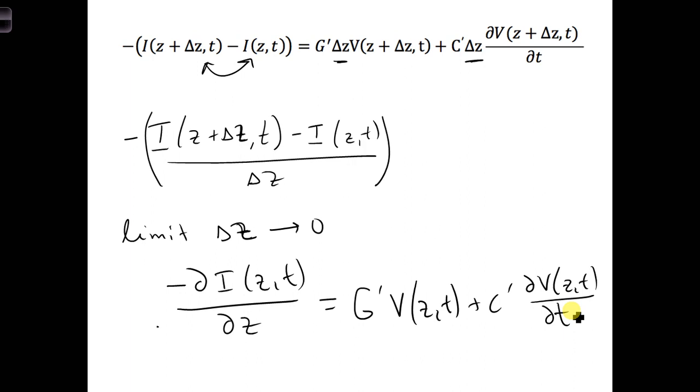Looking at this equation, we can first see that the current and the voltage are both a function of time and position z along the transmission line. This is expected because we are using distributed circuit theory rather than lumped element circuit theory.